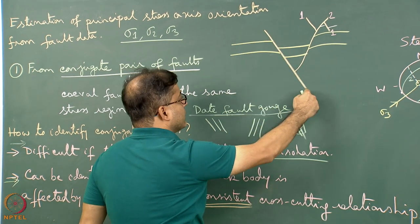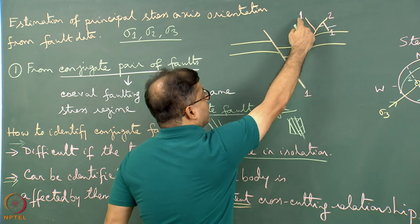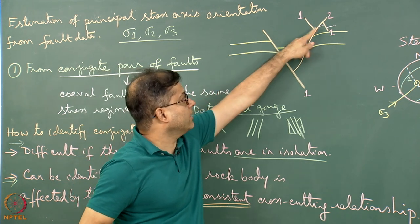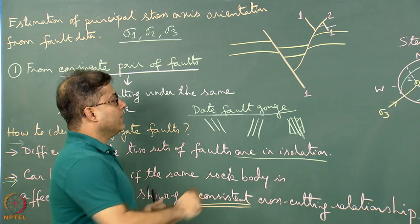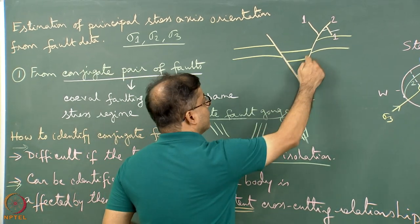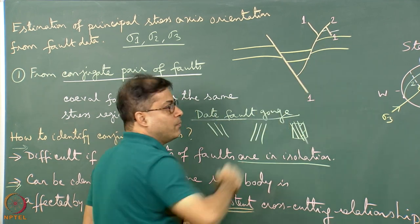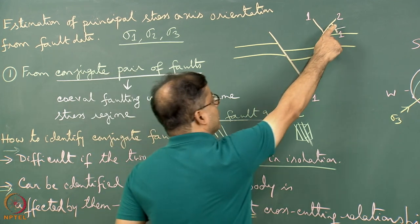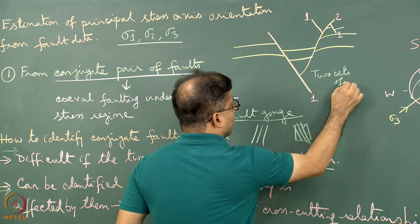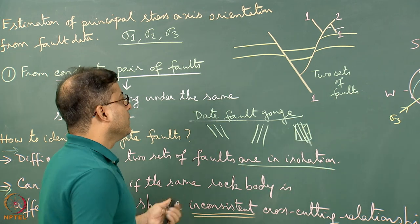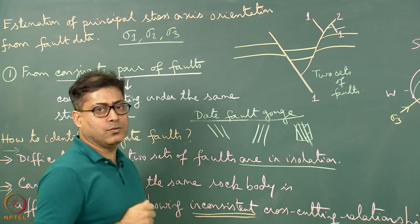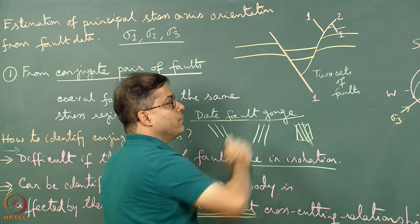In the diagram, the parallel lines represent fault set 1, and a listric fault that is non-parallel to set 1 represents set 2. The two sets intersect at an acute and an obtuse angle — they are not orthogonal. This is a case of conjugate faulting where fault 1 and fault 2 may have happened simultaneously.